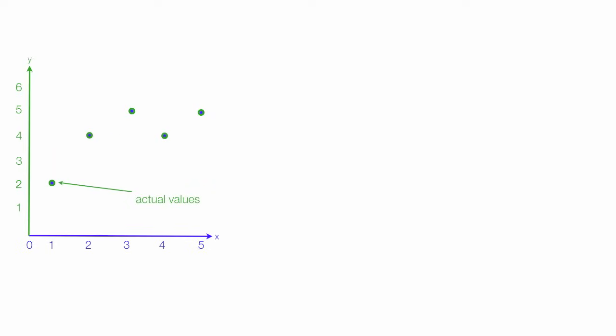To calculate R squared we take the actual values and we determine the mean of those values and we look at the distance from the actual value to the mean. So we have the distance from the actual value to the mean.